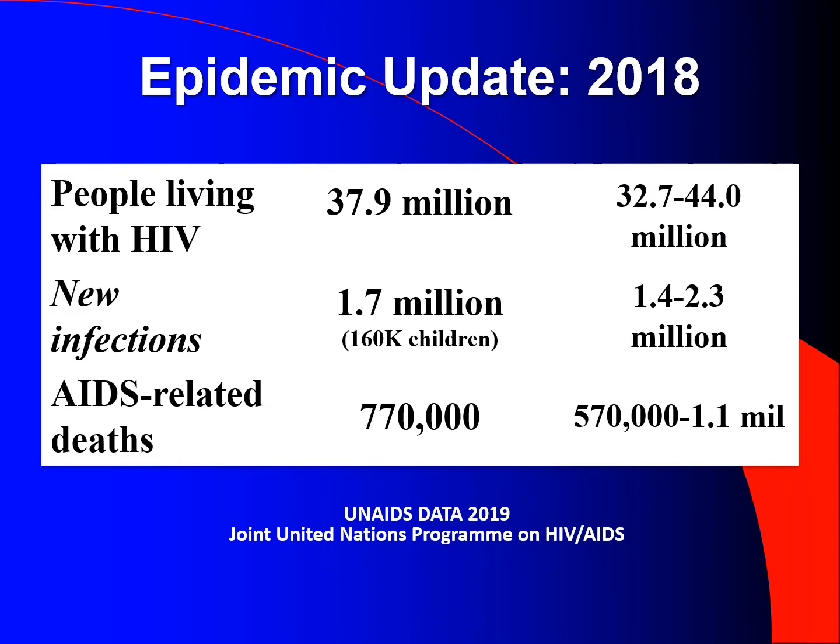Epidemic update 2018. People living with HIV: 37.9 million. New infections: 1.7 million. AIDS-related deaths: 770,000.